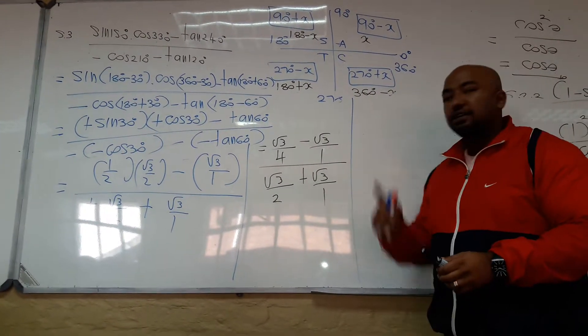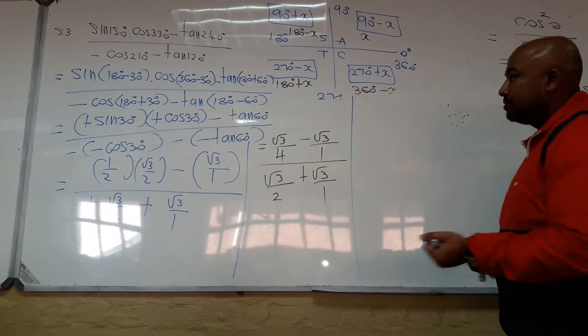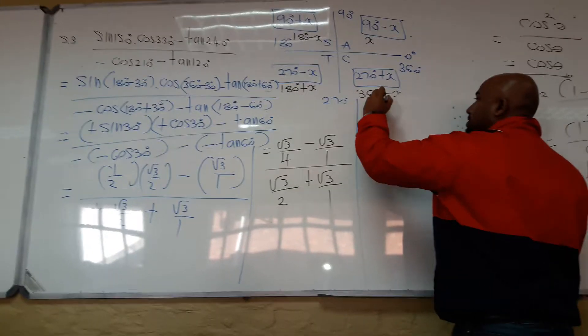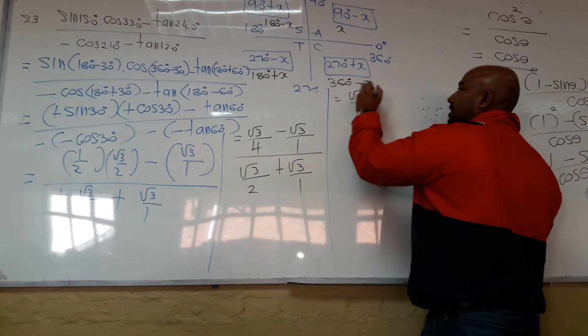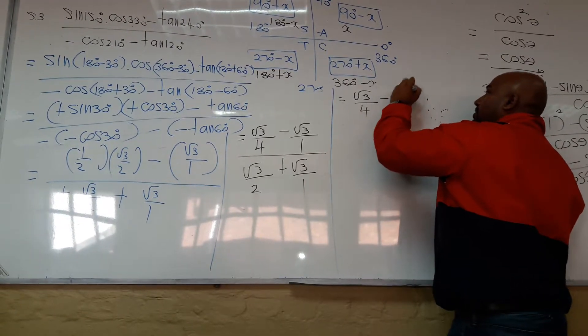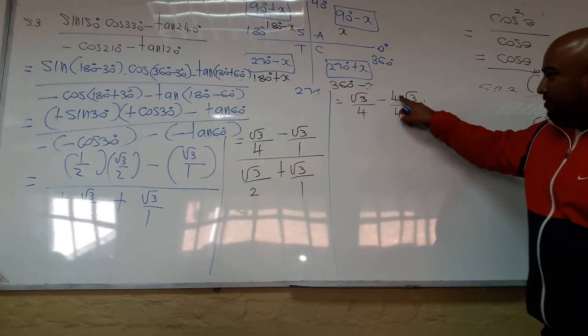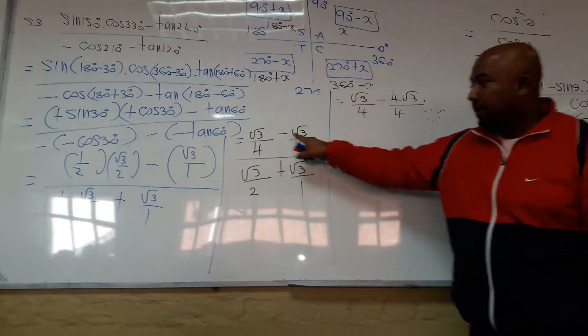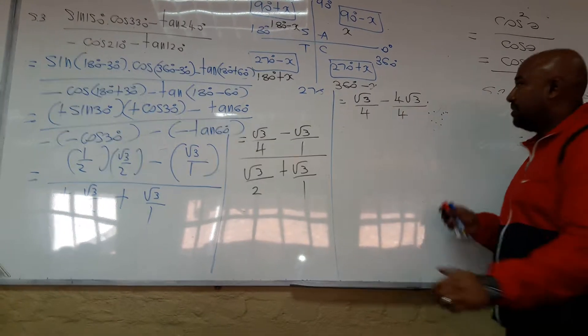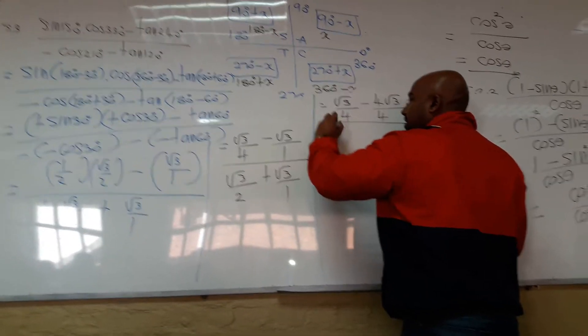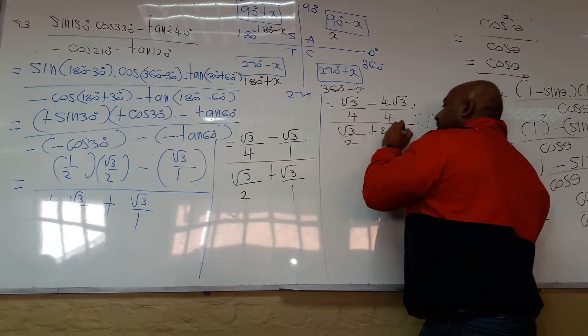So I'm going to find an LCD on the top. LCD on the bottom. So that is equal to square root 3 over 4 minus 4 square root 3 over 4. 4 and 4. What is 4 divided by 4? 1. I'm not changing anything. Can you see that? I'm writing it with a common denominator. So that will be square root 3 over 2 plus 2 root 3 over 2.